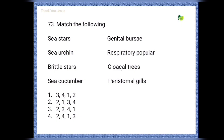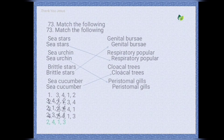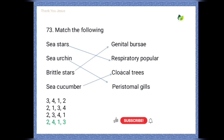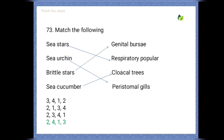Match the following for echinoderms: sea stars have respiratory pappulae; sea urchins have peristomal gills; brittle stars have genital bursae; sea cucumbers are related to cloacal trees.